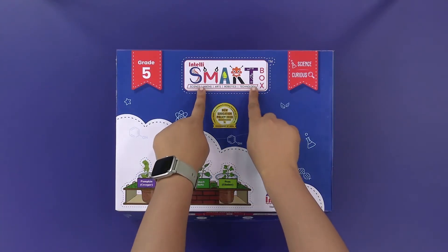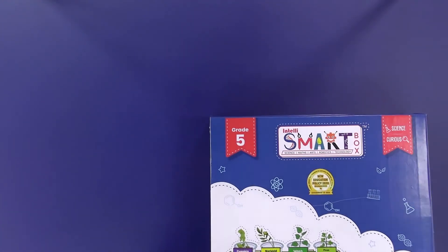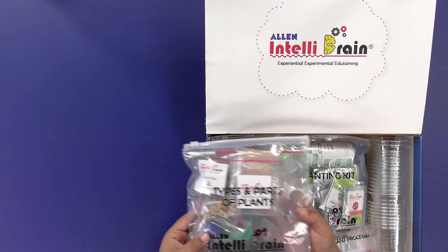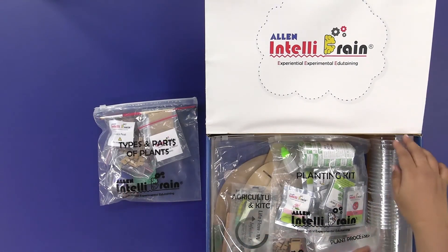From the IntelliSmart box, take out the types and parts of plants activity kit and the disposable glasses.